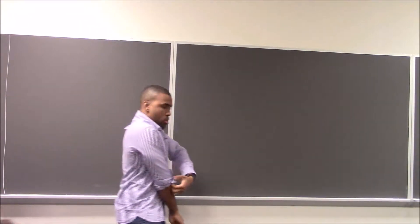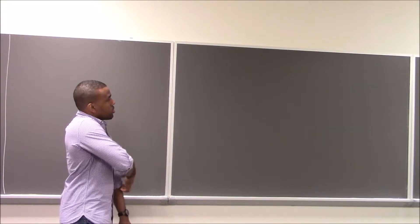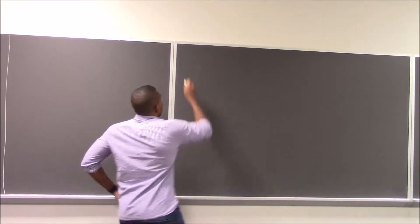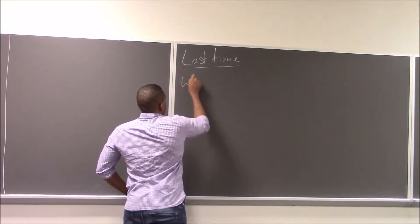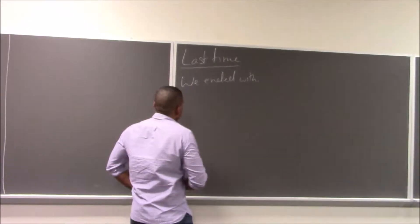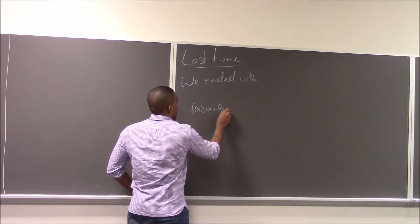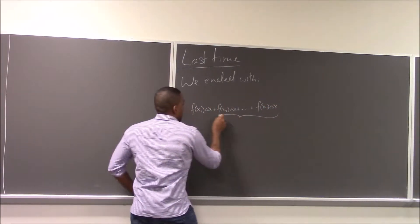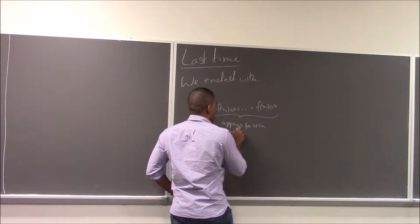Last time we started attacking the area problem by figuring out how to find an area under a curve. We used three approximation methods: the right-hand rule, the left-hand rule, the midpoint rule. And we ended on this very important idea that if you take a Riemann sum — f(x1)·Δx + f(x2)·Δx + ... + f(xn)·Δx — this is an approximation for an area under a curve.